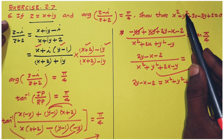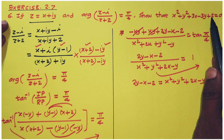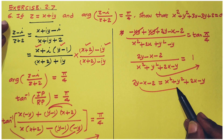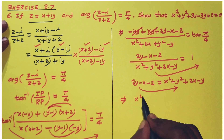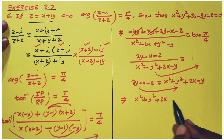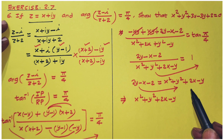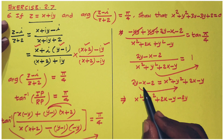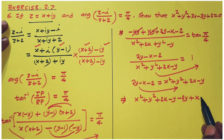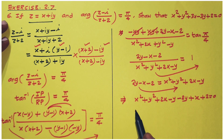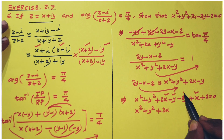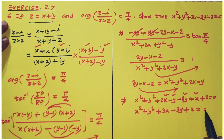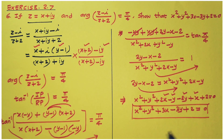Rearranging, x squared plus y squared plus 2x minus y minus 2y plus x plus 2 equals 0. Simplifying: 2x plus x is 3x, minus y minus 2y is minus 3y, so x squared plus y squared plus 3x minus 3y plus 2 equals 0. This is exactly what we needed to prove.